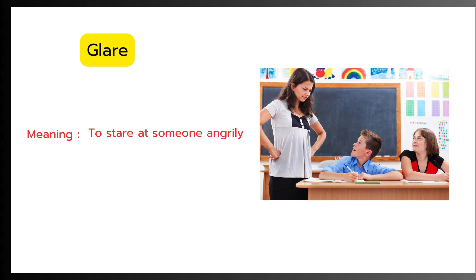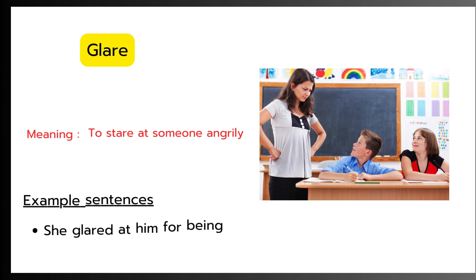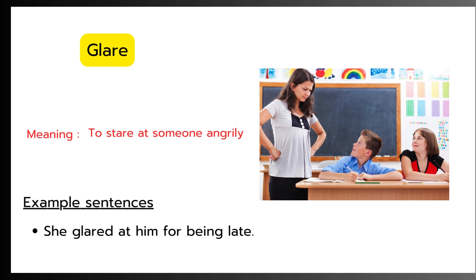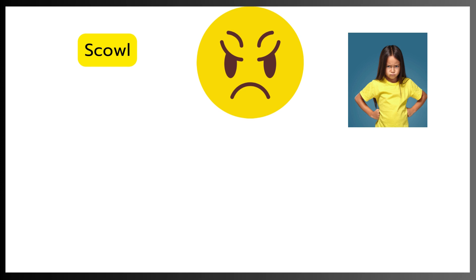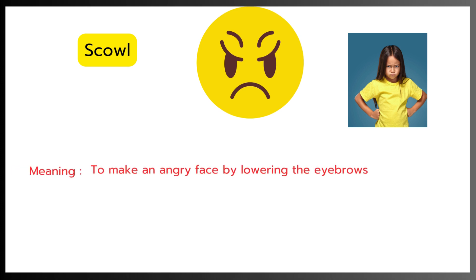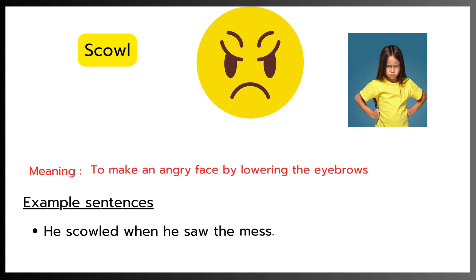Glare. Meaning: To stare at someone angrily. Example: She glared at him for being late. Scowl. Meaning: To make an angry face by lowering the eyebrows. Example: He scowled when he saw the mess.